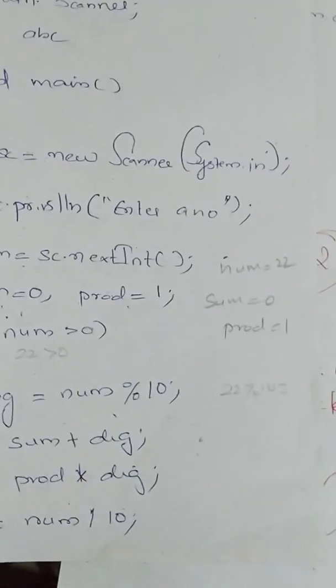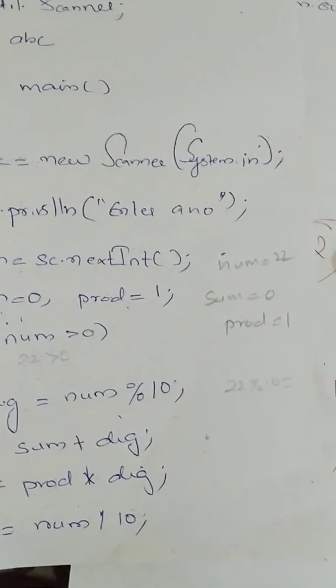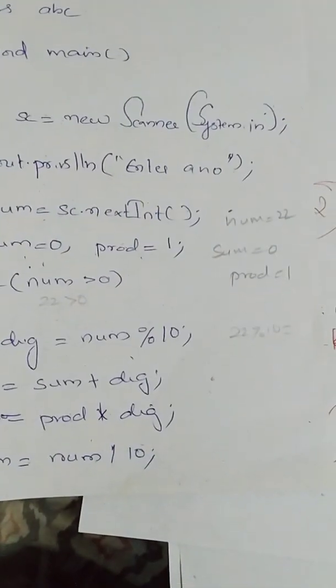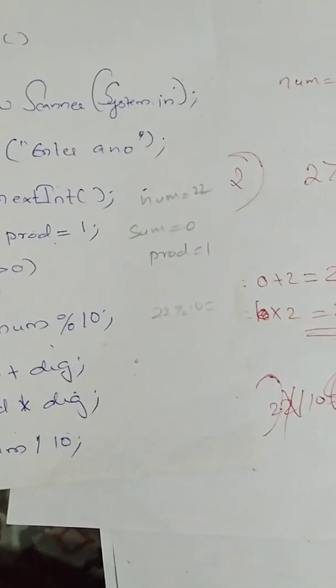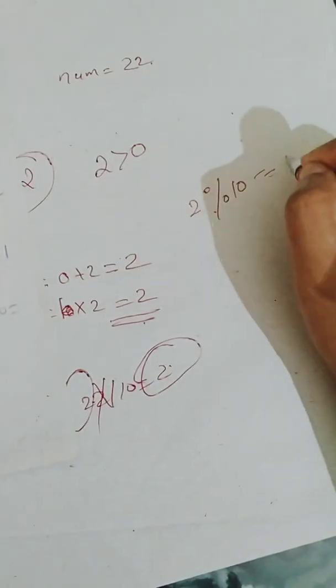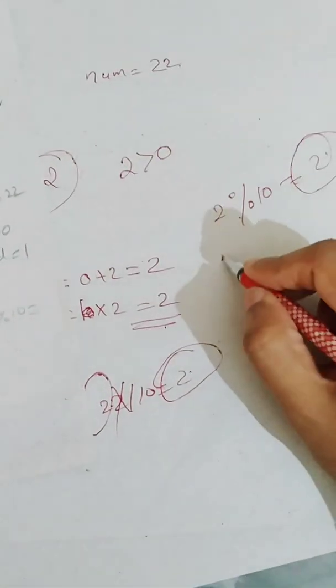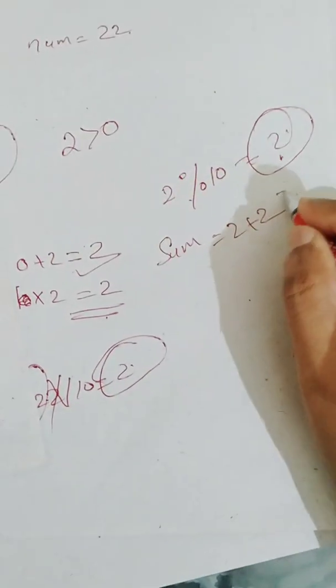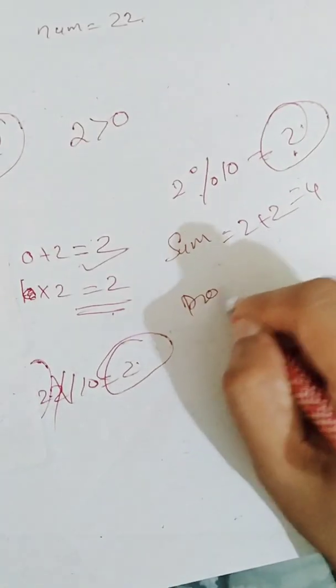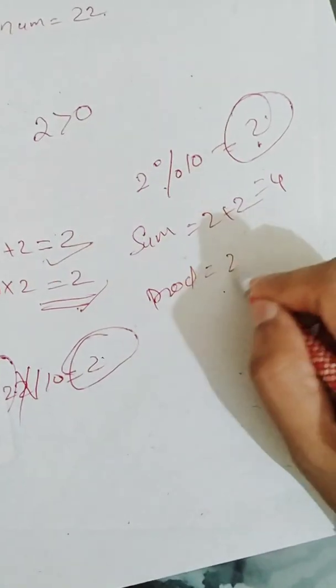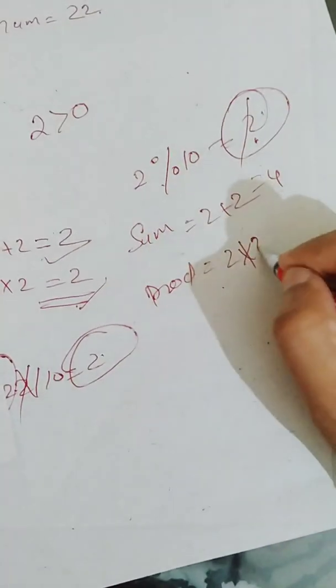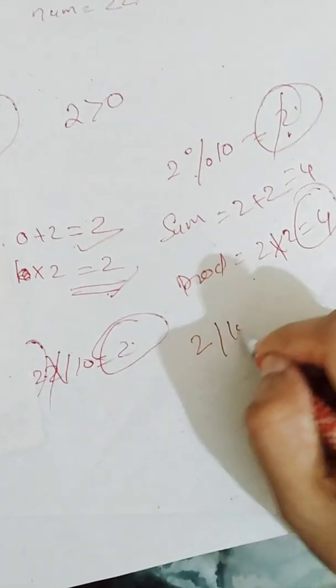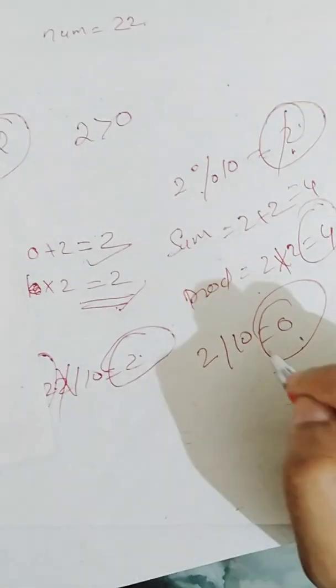Moving to the loop again, num is greater than 0, that is 2 is greater than 0, come inside. Again, it will take the last digit, that is 2 modulus 10 which gives 2 as output. So sum is now 2, so 2 plus this 2 which is equal to 4. Product is 2, so 2 into this 2, this is equal to 4. Next, num is 2, so 2 by 10 which is equal to 0, quotient.